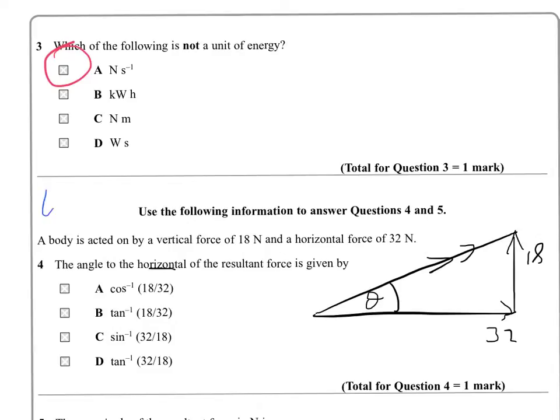We remind ourselves that tan of theta is opposite over adjacent. SOHCAHTOA - TOA is tan of theta is opposite over adjacent. So tan of theta here will be 18 over 32, so theta will be tan to the minus 1 of 18 over 32. That means we're talking about B.